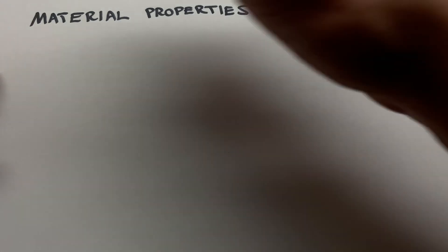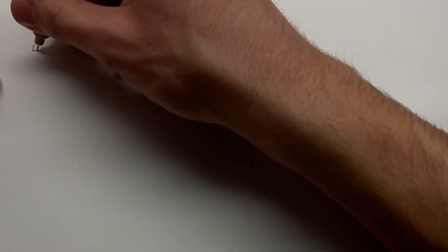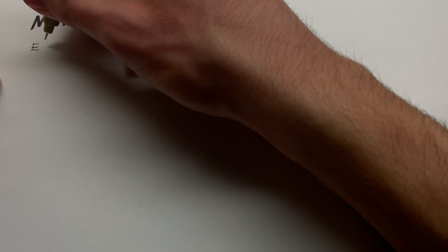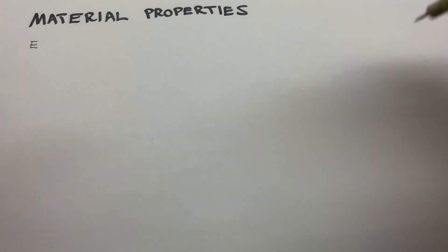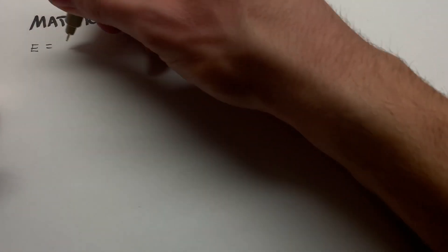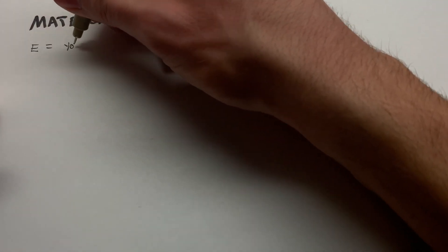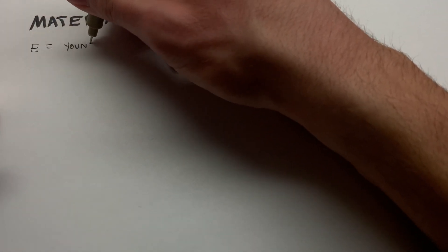The first one to talk about is E, which is your quintessential material property in any introductory material science. This is probably going to be the first thing you hit, and of course this is the Young's modulus or the modulus of elasticity.